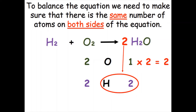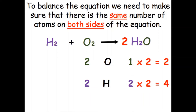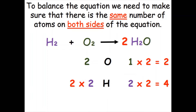This also affects the amount of hydrogen. We now have two water molecules, so for the hydrogen atoms we need to multiply by two as well, giving us four hydrogen atoms on the right-hand side. To balance hydrogen, we have four on the right and two on the left, so we multiply the left by two — putting a 2 in front of the hydrogen molecule H₂.